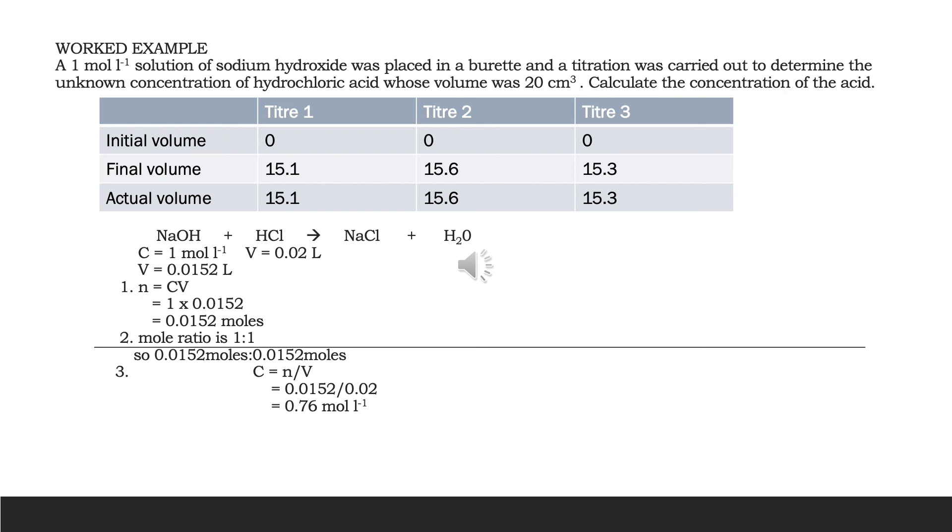That takes us now onto step three. So step three, if you go back to the question, the question said calculate the concentration of the acid. So the formula we now use is C equals N over V and it's 0.0152 divided by 0.02. The 0.02 because that's the volume of hydrochloric acid in litres.